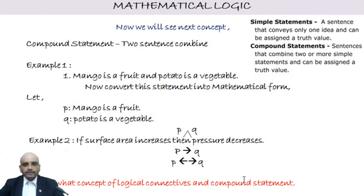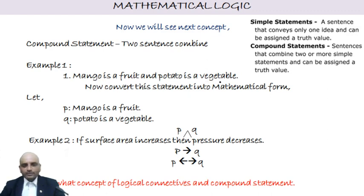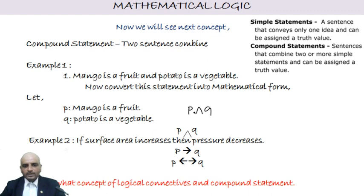A compound statement is formed by combining two sentences. For example: 'Mango is a fruit and potato is a vegetable.' Here 'mango is a fruit' is one statement P, and 'potato is a vegetable' is another statement Q. In mathematical form this is written as P ∧ Q, where ∧ is the symbol for 'and' — the inverted V.